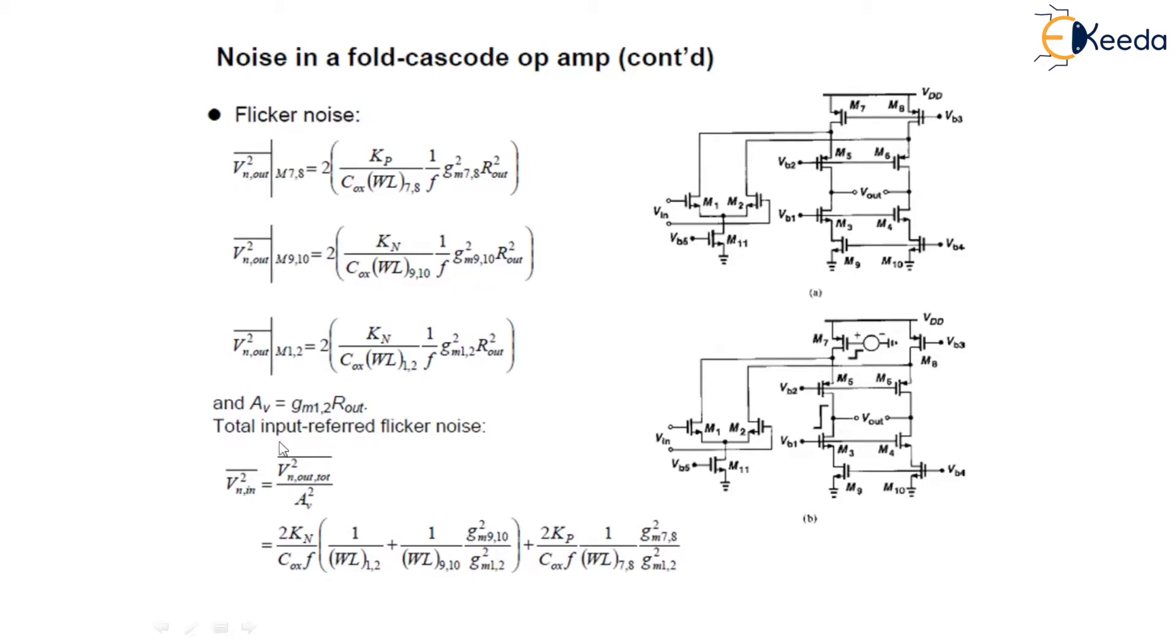Now the total input-referred flicker noise is given as V²n,in equals V²n,out,total/Gm², which can be calculated as 2Kn/(Cox×f)[1/(WL)1-2 + 1/(WL)9-10×Gm²9-10/Gm²1-2] plus 2Kp/(Cox×f)[1/(WL)7-8×Gm²7-8/Gm²1-2].